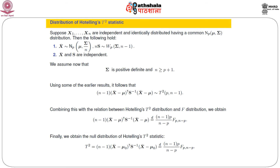Let us see the connection between the Hotelling T-square distribution and the Hotelling T-square statistic. The Hotelling T-square distribution has several components: one is X-bar, another is S, another is S-inverse, and it is a quadratic form. We already encountered this quadratic form in the last slide, involving a multivariate normal variable and the Wishart matrix.